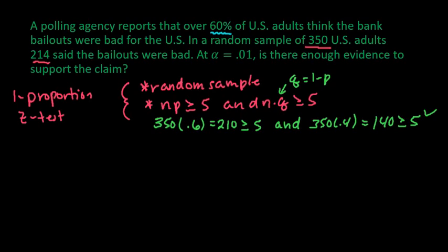Some of the other textbooks that I have taught from talk about the independence feature. The textbook that I'm currently using does not list this as a condition, but other textbooks list that the sample size has to be less than 10% of the population. And 350 is definitely less than 10% of all U.S. adults. So this condition is met.